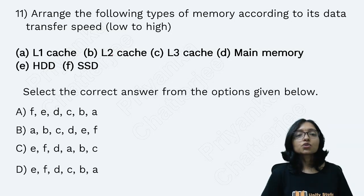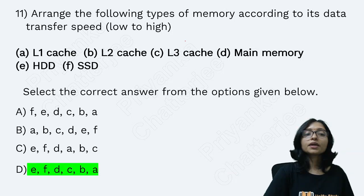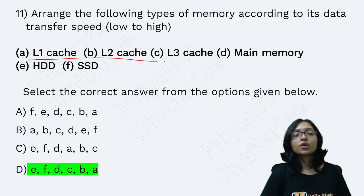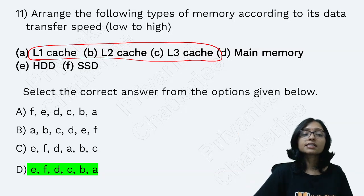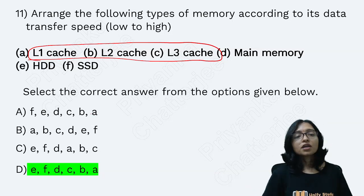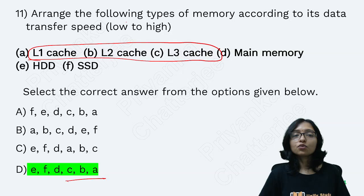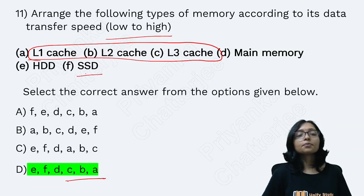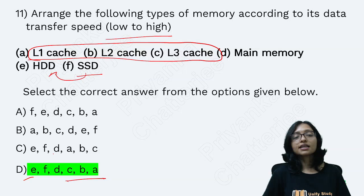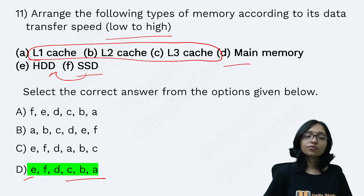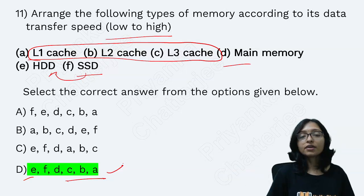Always remember: L1 cache has the highest speed, then L2, then L3. For storage, SSD speed is higher than HDD, so the order from low to high speed is: HDD → SSD → Main Memory → L3 → L2 → L1 cache. This is a very important concept to memorize.